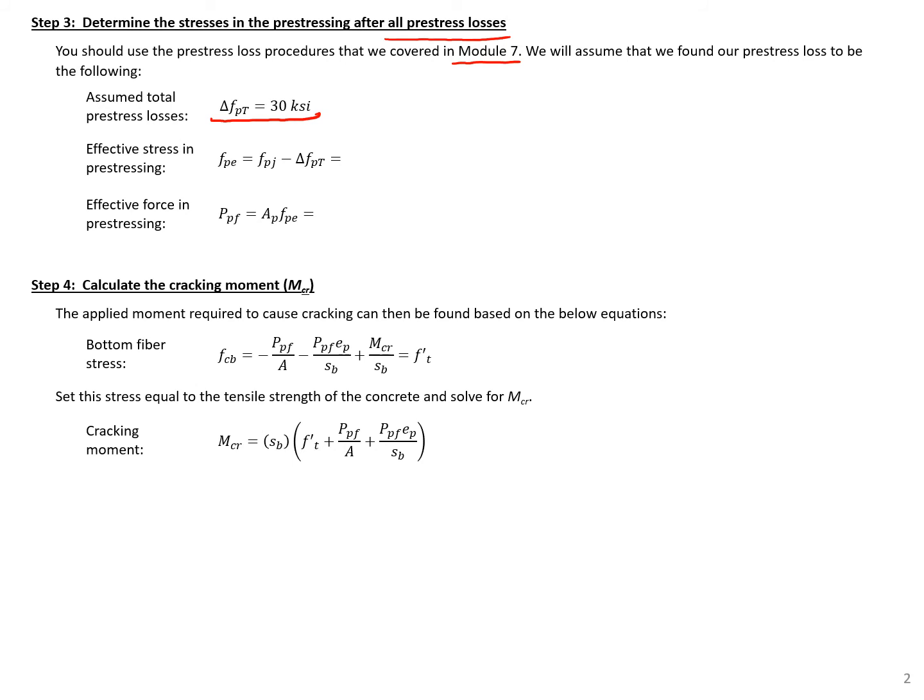Our effective stress in the pre-stressing then is just the stress in the pre-stressing before transfer, 202.5, minus our total pre-stress losses, 30 ksi, which will give us a value here of 172.5 ksi. We can find our effective force in the pre-stressing then just by taking the area of our pre-stressing strands, 0.918 square inches, times that stress that we just found, the effective stress, 172.5, which will give us a force here of 158.4 kips.